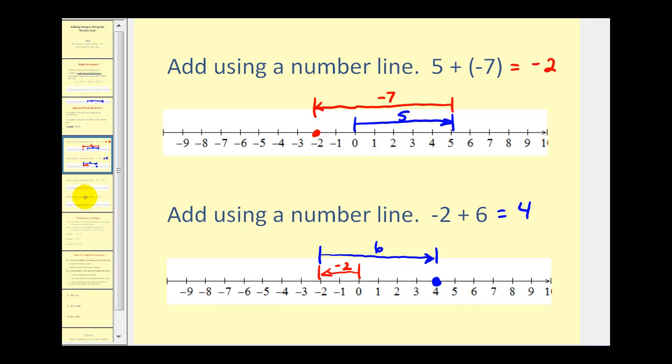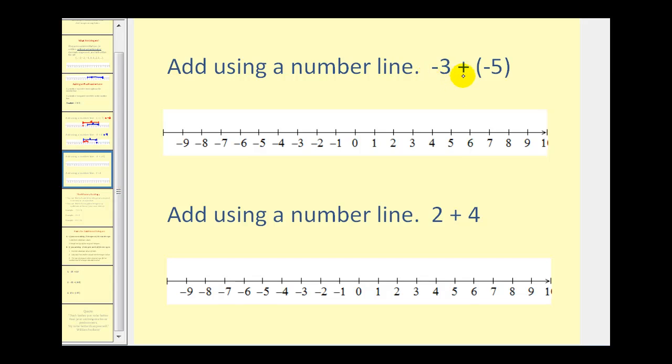Let's take a look at a couple more examples. Here we have negative three plus negative five. So again, we start at zero. We'll move left three units for the negative three.